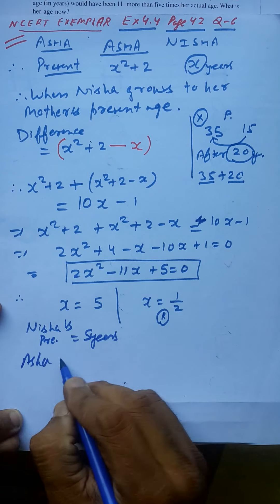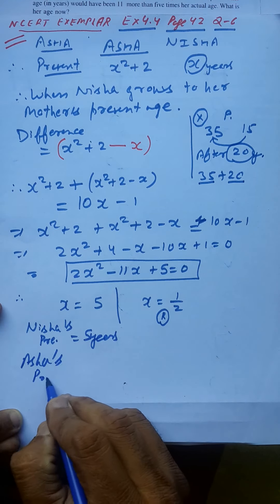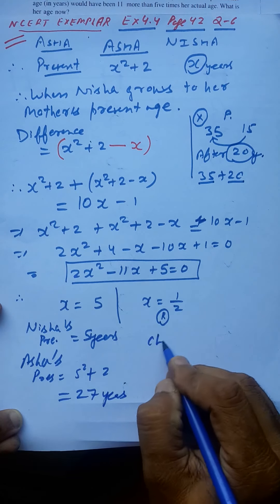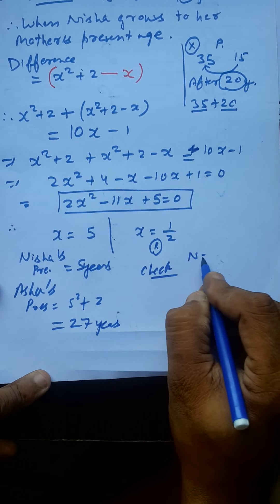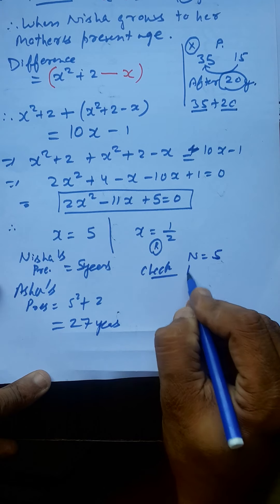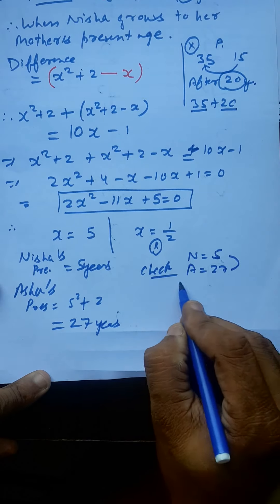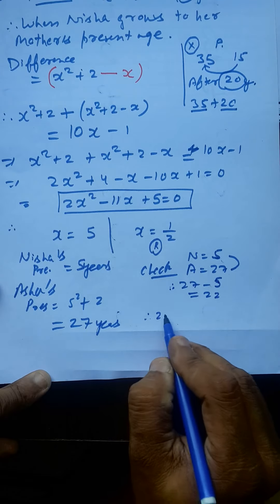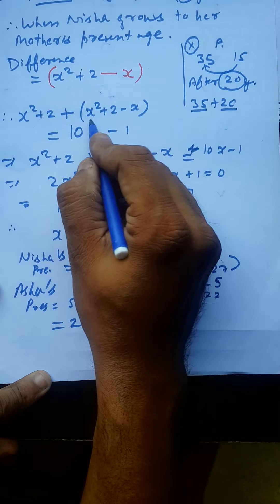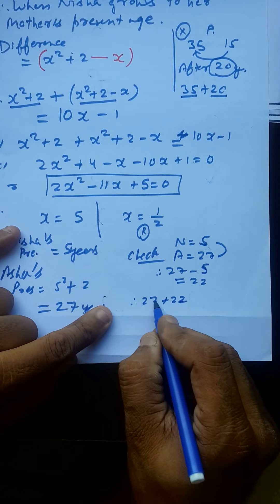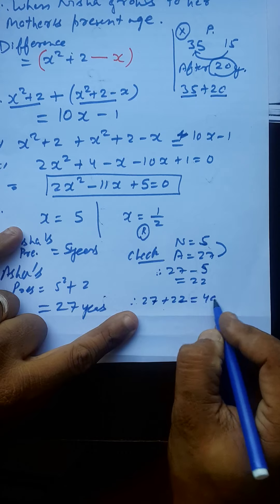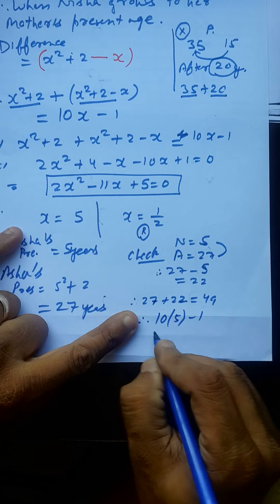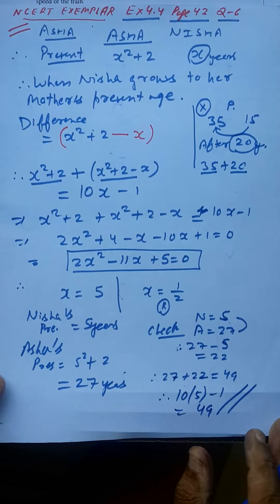Nisha's present age is 5 years. Asha's present age is 5 squared plus 2, that is 27 years. Let's verify: Nisha's present age is 5, Asha's present age is 27. Their difference is 27 minus 5 = 22. Adding 22 to Asha's present age: 27 plus 22 = 49. And 10 times Nisha's present age minus 1 = 50 minus 1 = 49. The answer is absolutely correct, friends. God bless you all.